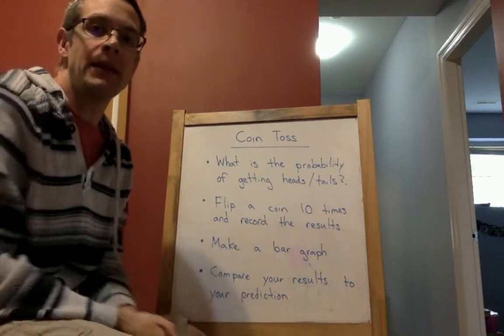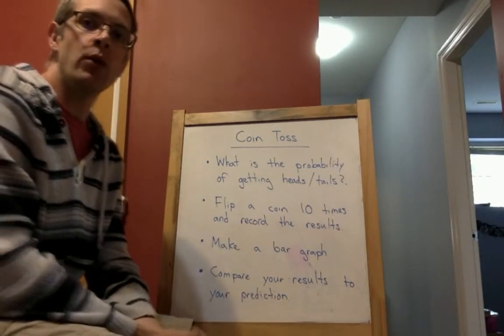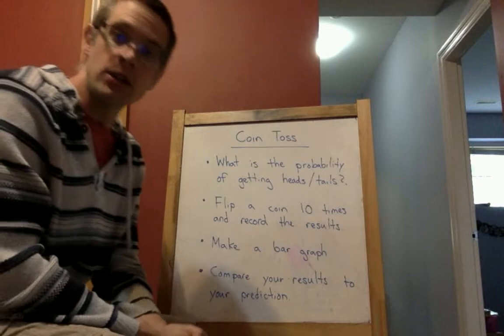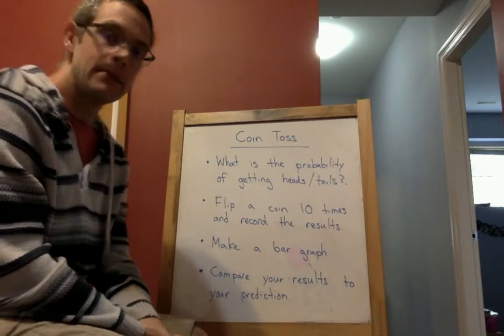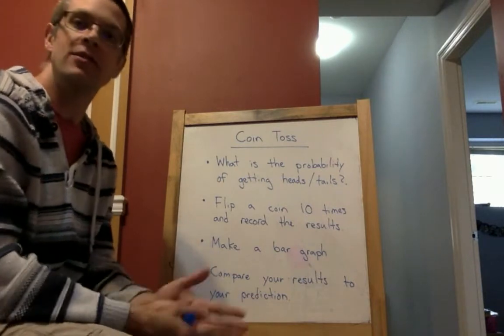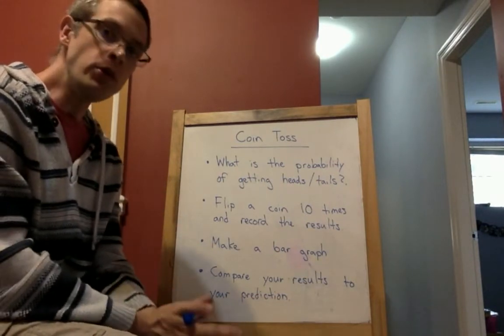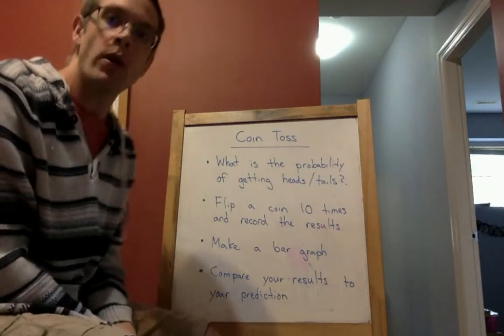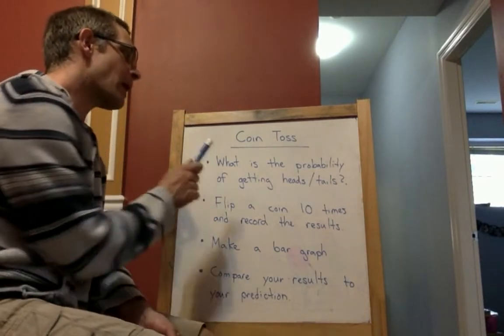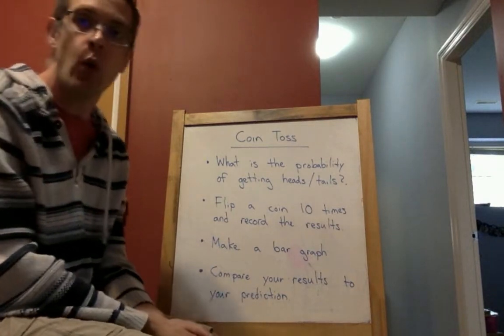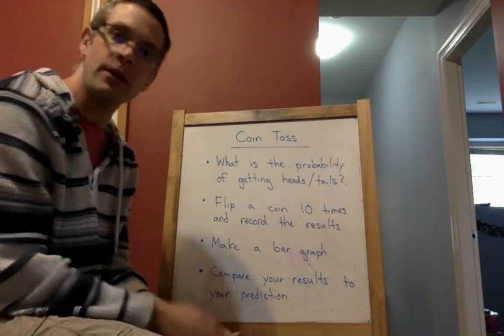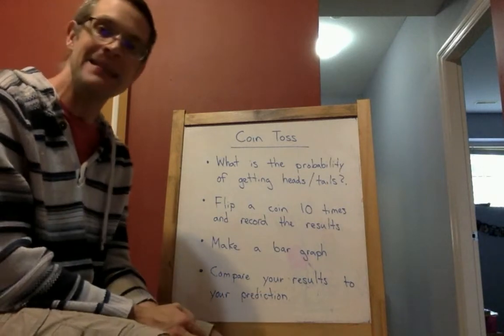So for your probability experiment, I would like you to do a coin toss. So I would like you to flip a coin 10 times and see what the results are. But before you do that, very importantly, I want you to make your predictions. Before you flip your coin, I want you to think about what is the probability of getting heads or tails, what do you think will happen?